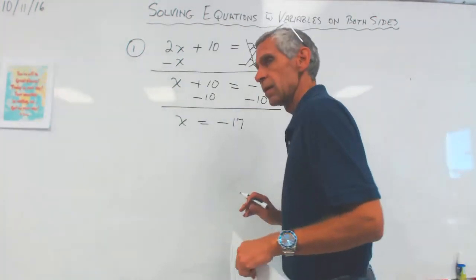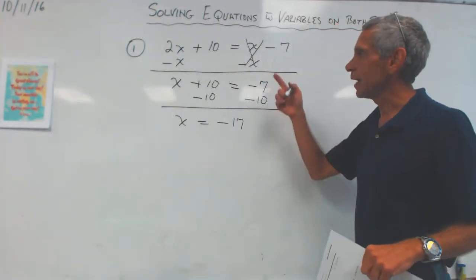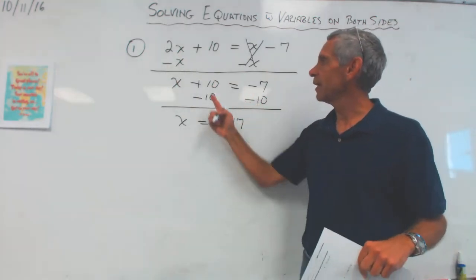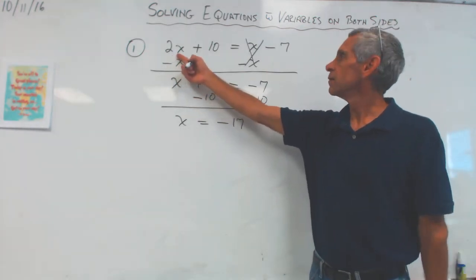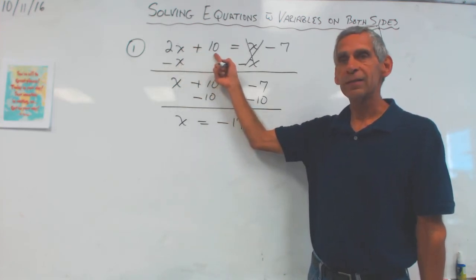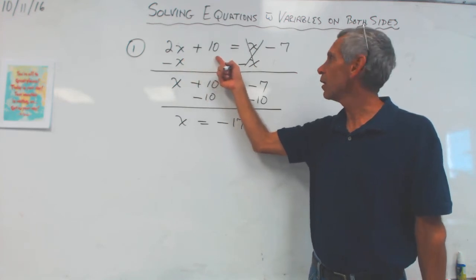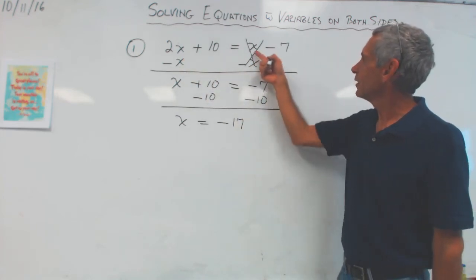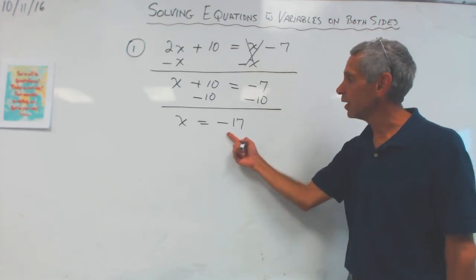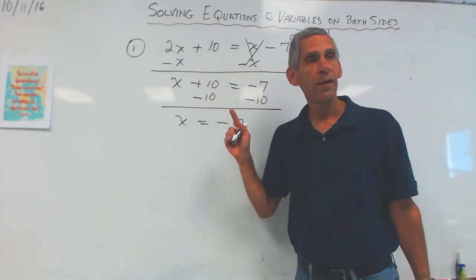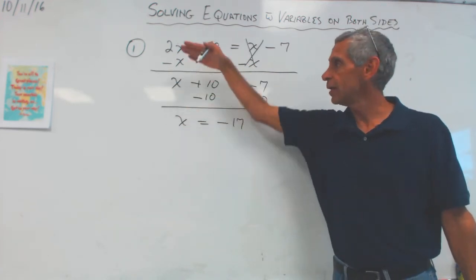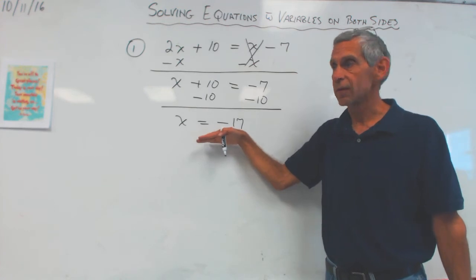Let's try another one. Should we check it? We can check it, but I'm running out of time. So two times negative 17 would be negative 34. Negative 34 plus 10, so negative 24. And then negative 17 and negative 7 is negative 24. So you could plug this in if you wanted to. But for now, I'm not asking for you to check necessarily. I just want you to show me all these steps in your solving.